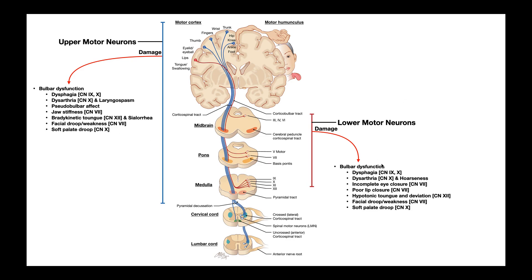For lower motor neuron damage in the corticobulbar tracts, there is some overlap with upper motor neuron signs: dysphagia, dysarthria, potentially hoarseness of the voice, incomplete eye closure involving cranial nerve 7, poor lip closure also involving cranial nerve 7, a hypotonic tongue, deviation of the tongue toward the affected side involving cranial nerve 12, facial drooping and weakness, and drooping of the soft palate.